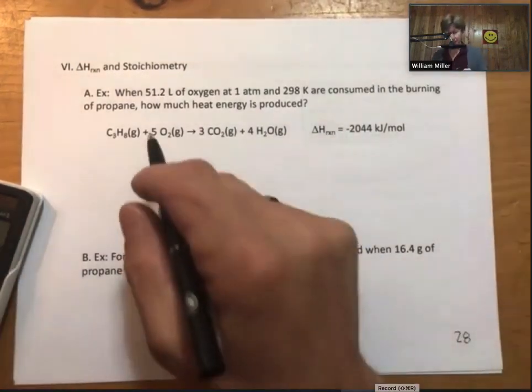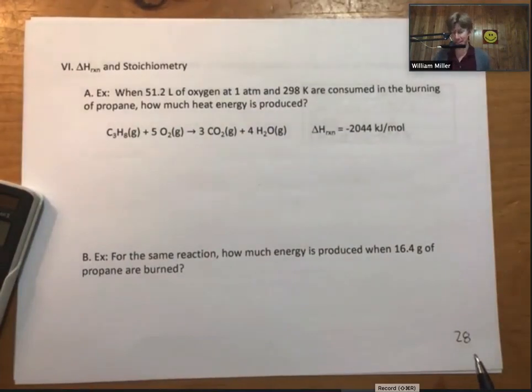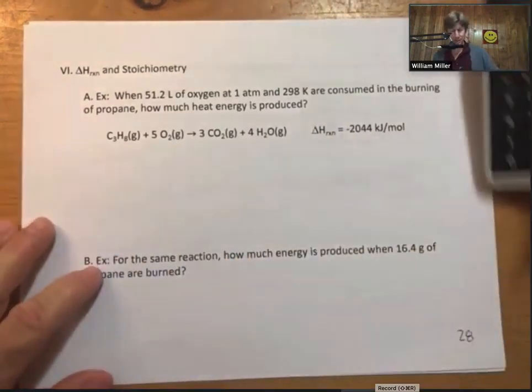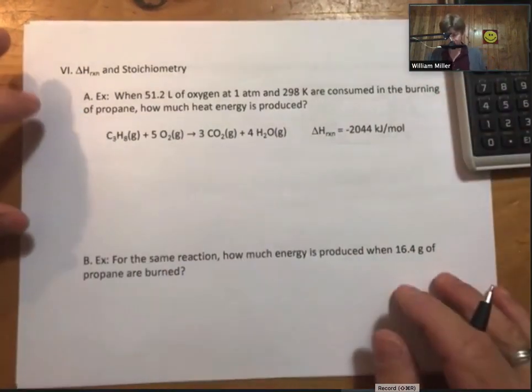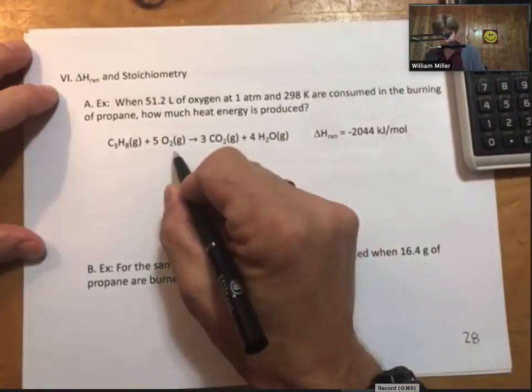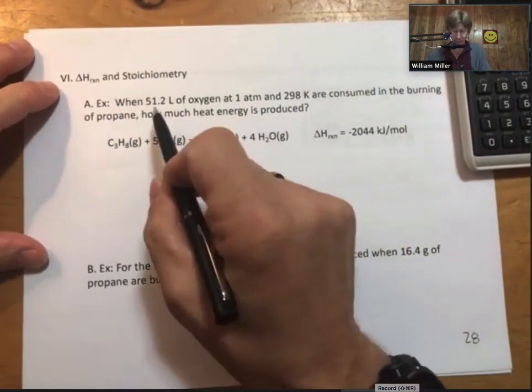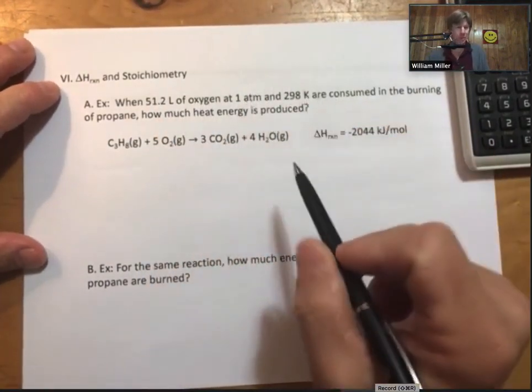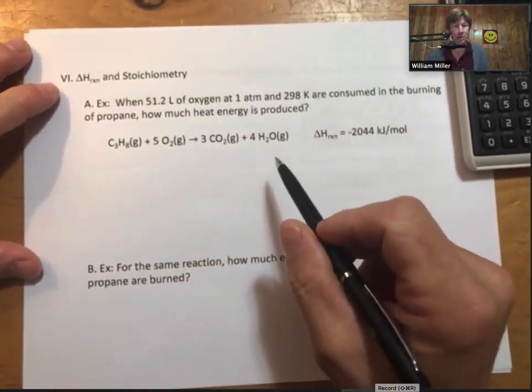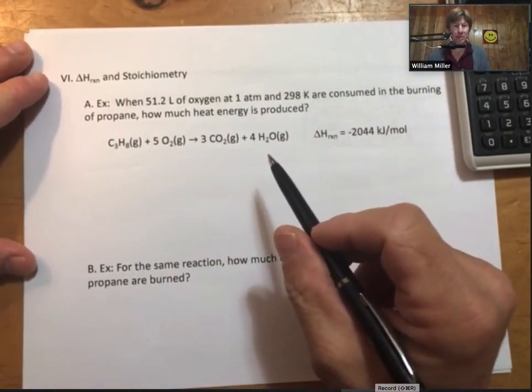So let's get to that. This is Roman numeral six. We'll go straight to examples. When 51.2 liters of oxygen at one atmosphere and 298 Kelvin are consumed in the burning of propane, how much heat energy is produced? So let's see, I've got my calculator here. So I notice that oxygen is a gas. I've got the volume, pressure, and temperature of that gas, so I can find moles of gas. That's an ideal gas law problem.